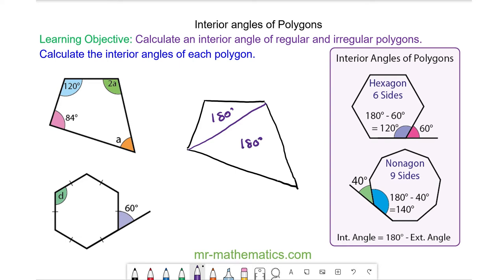So because we have two triangles in a quadrilateral, the sum of the interior angles inside the quadrilateral is two lots of 180 which is 360 degrees.